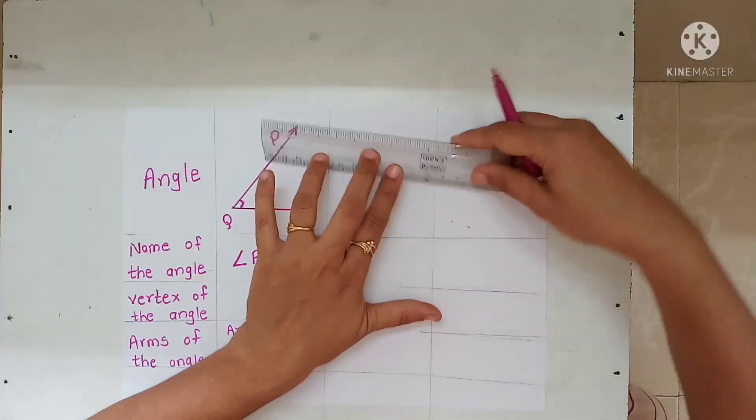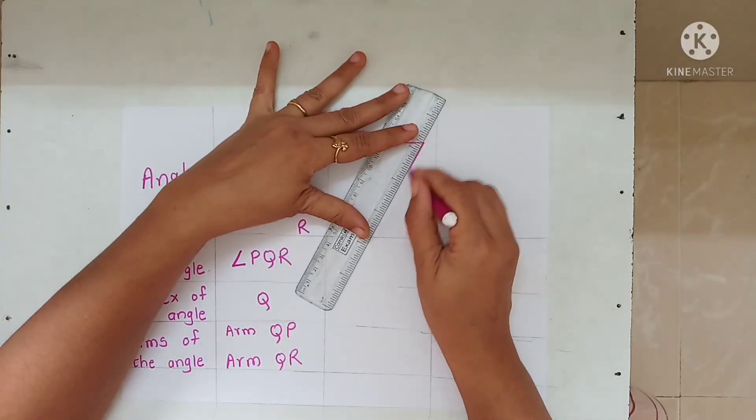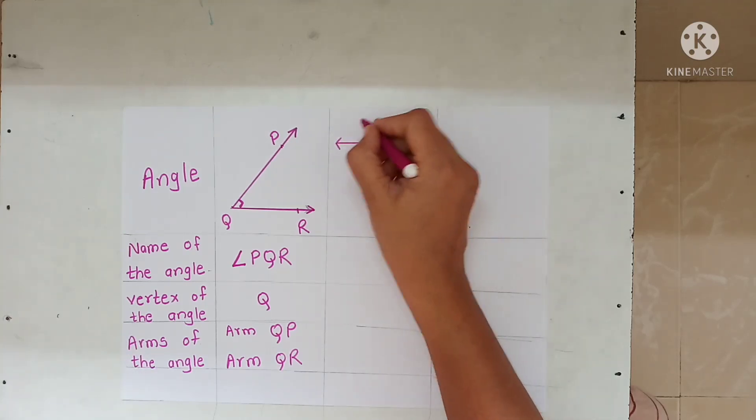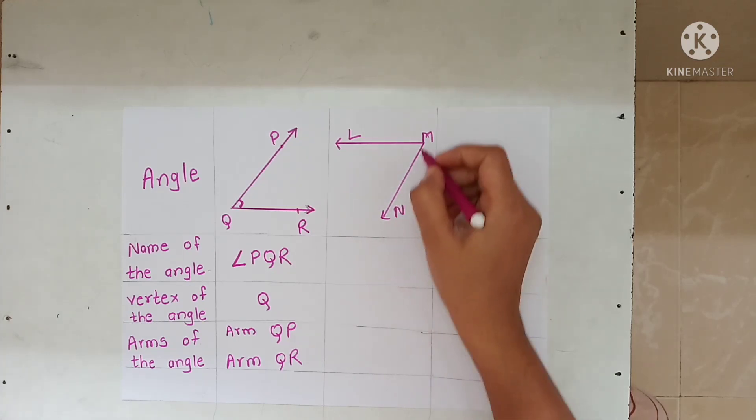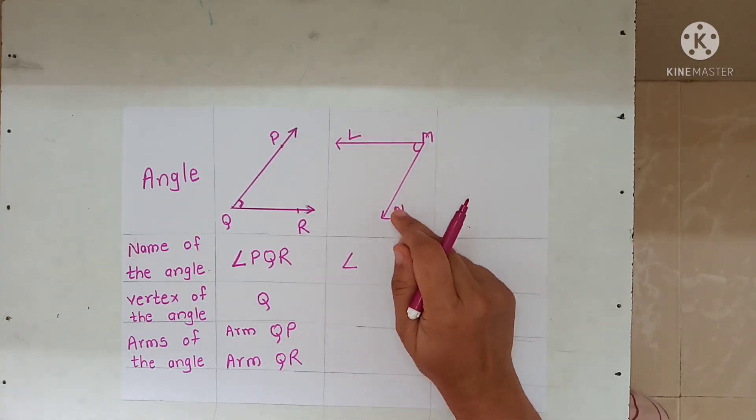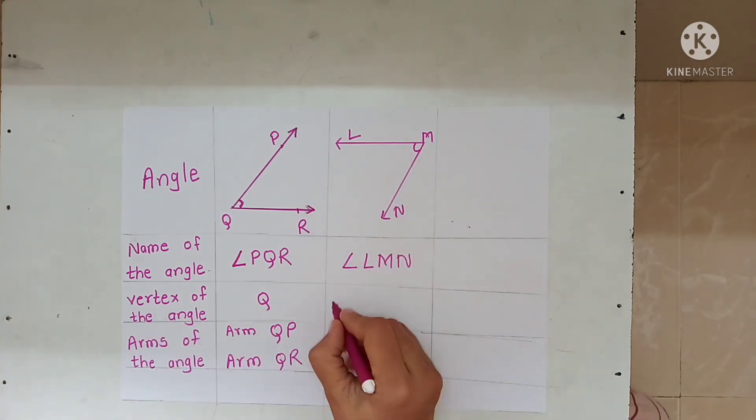Second angle: angle LMN, angle LMN. We write this sign to denote the angle: angle LMN or NML.